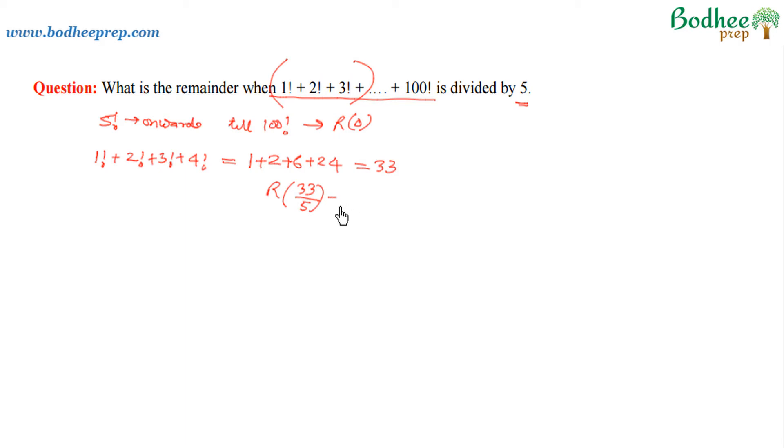33 divided by 5 gives a remainder of 3. As we discussed earlier, all numbers from 5 factorial onwards till 100 factorial will be multiples of 5, hence the remainder will be 0. So for this overall expression, the answer will be 3.